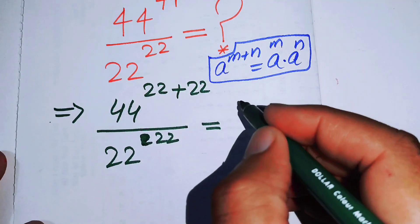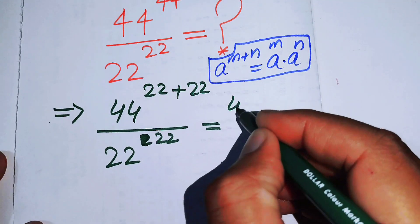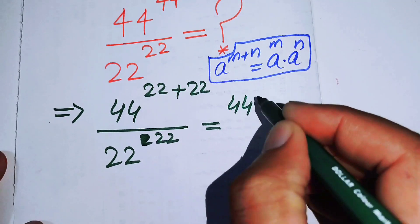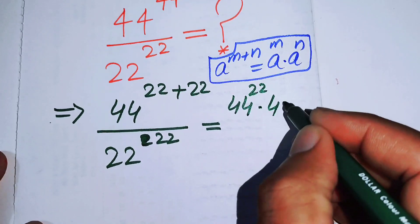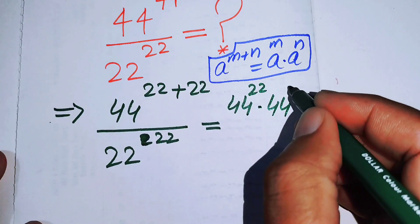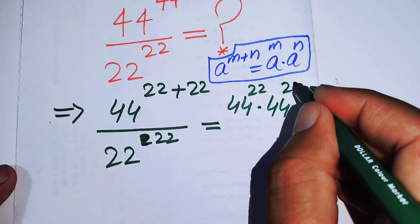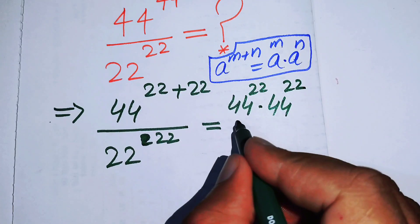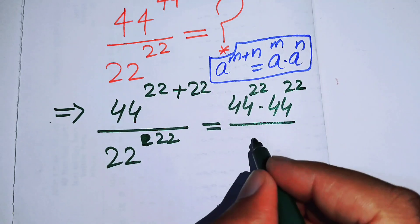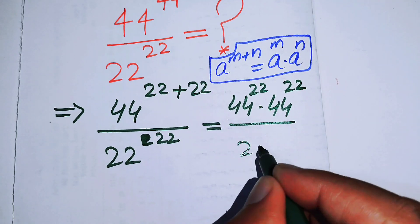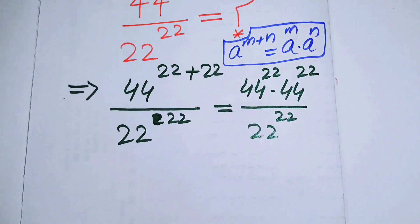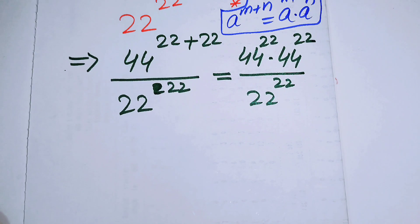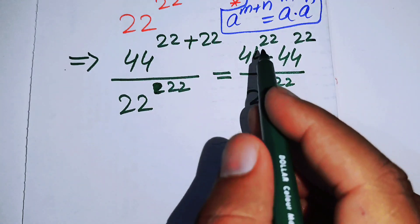Breaking the exponent, we write the numerator as 44 to the power of 22 times 44 to the power of 22, all over 22 to the power of 22.